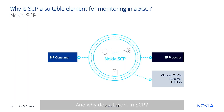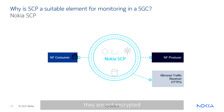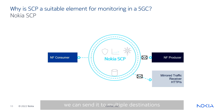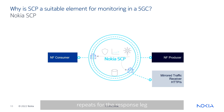Why does monitoring work at SCP? Although packets are encrypted everywhere, specifically at SCP they are not encrypted. A packet starts encrypted on the wire, but when it arrives at SCP it is no longer encrypted. At this point we can make multiple copies of it, we can send it to multiple destinations, and the same thing repeats for the response leg as well.